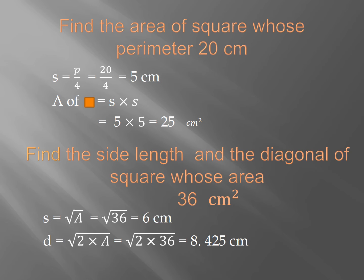Find the side length and the diagonal of the square whose area is 36 cm². If we have the area and need to get the side, I put the area under the square root sign in the calculator. So, root of 36 equals 6 cm. If we have the area and need to get the diagonal, I put the area times 2 under the root in the calculator, so root of 2 times 36 equals approximately 8.485 cm.